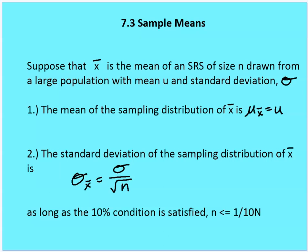Back to sample means. Suppose the sample mean is the mean of an SRS of size N drawn from a large population that has a mean of µ and a standard deviation of sigma. The mean of the sampling distribution is going to be the mean of the population. The standard deviation of the sampling distribution is going to be sigma over the square root of the sample size, as long as the 10% condition is satisfied.